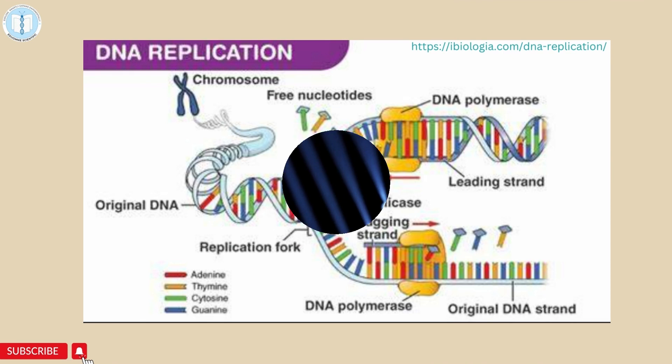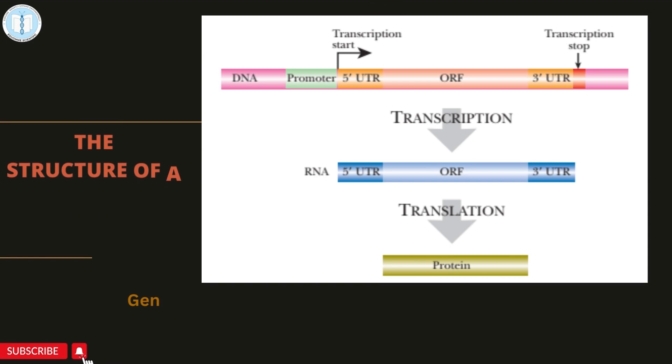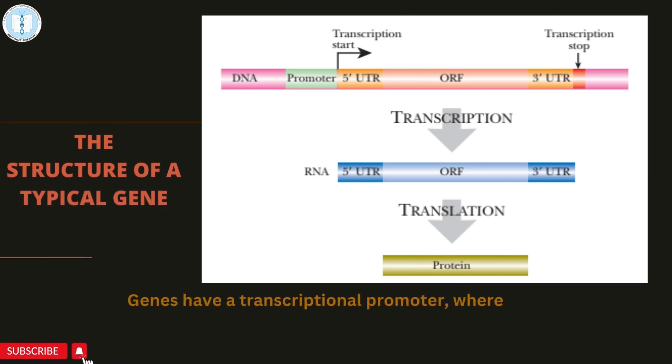DNA replication occurs in cells in preparation for the cell division processes of mitosis and meiosis. Without replication, daughter cells would not receive the library of information required to sustain life. The transcription process results in the formation of a strand of RNA that is a copy of a segment of the DNA on which it is formed.